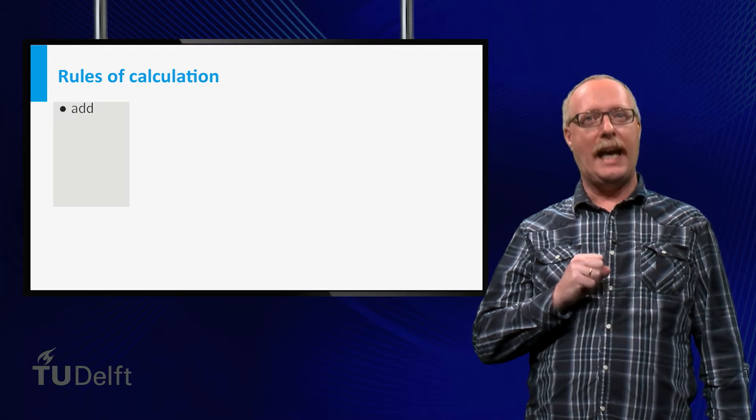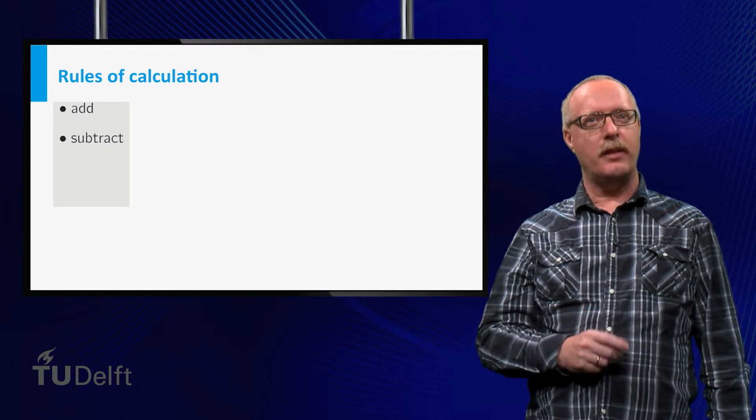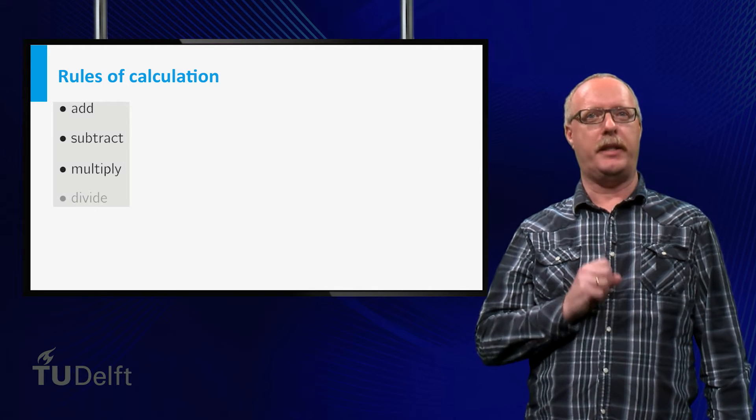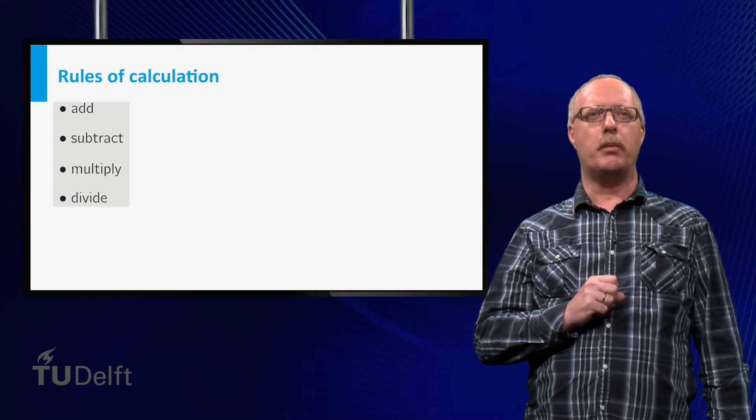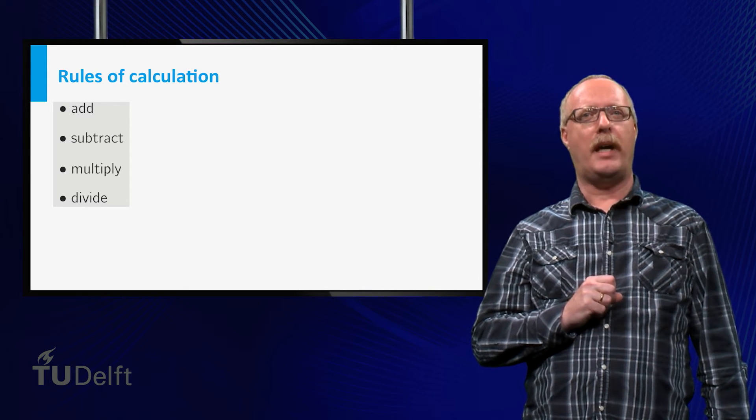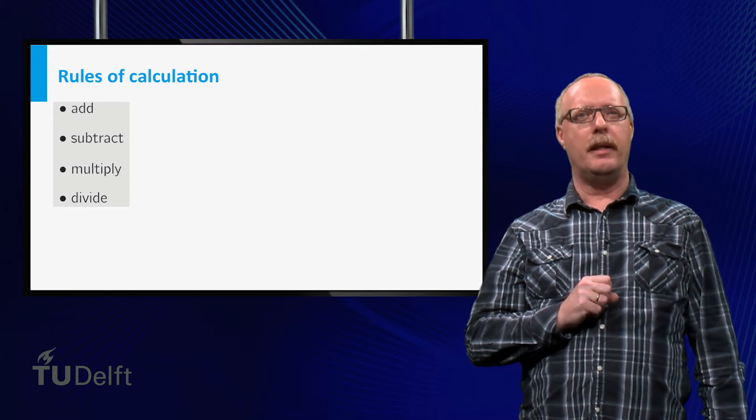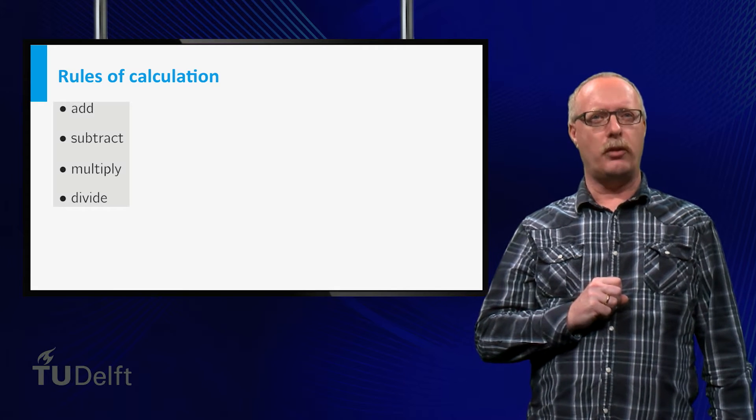We can add, we can subtract, we can multiply, and we can divide with complex numbers, and always the answer can be written in the form x plus i times y. Let us look how this works in some examples.